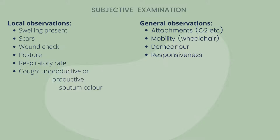Once you have your history, you can go into examination, because now you have an idea of what you're looking for and what direction to go with your examination — what system and what body part you're working on. You start with local observations, which is just looking at the patient's general well-being: maybe whether they have swelling or scars from surgery, checking their wounds, checking if they are healing well.